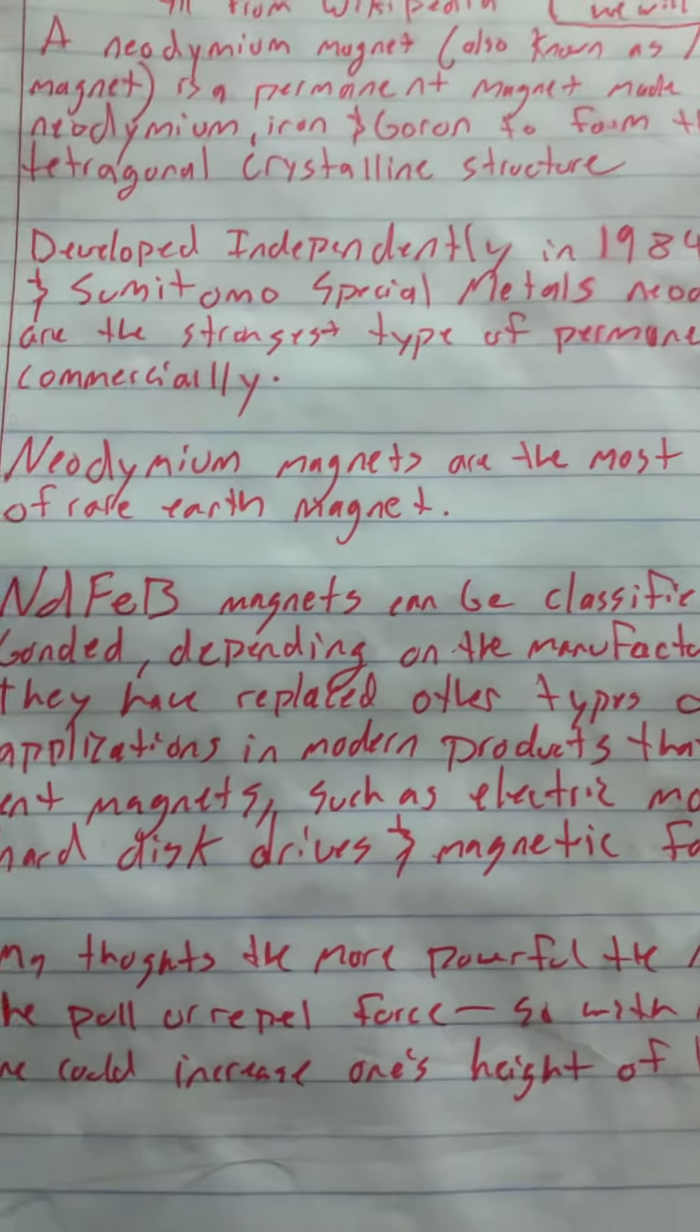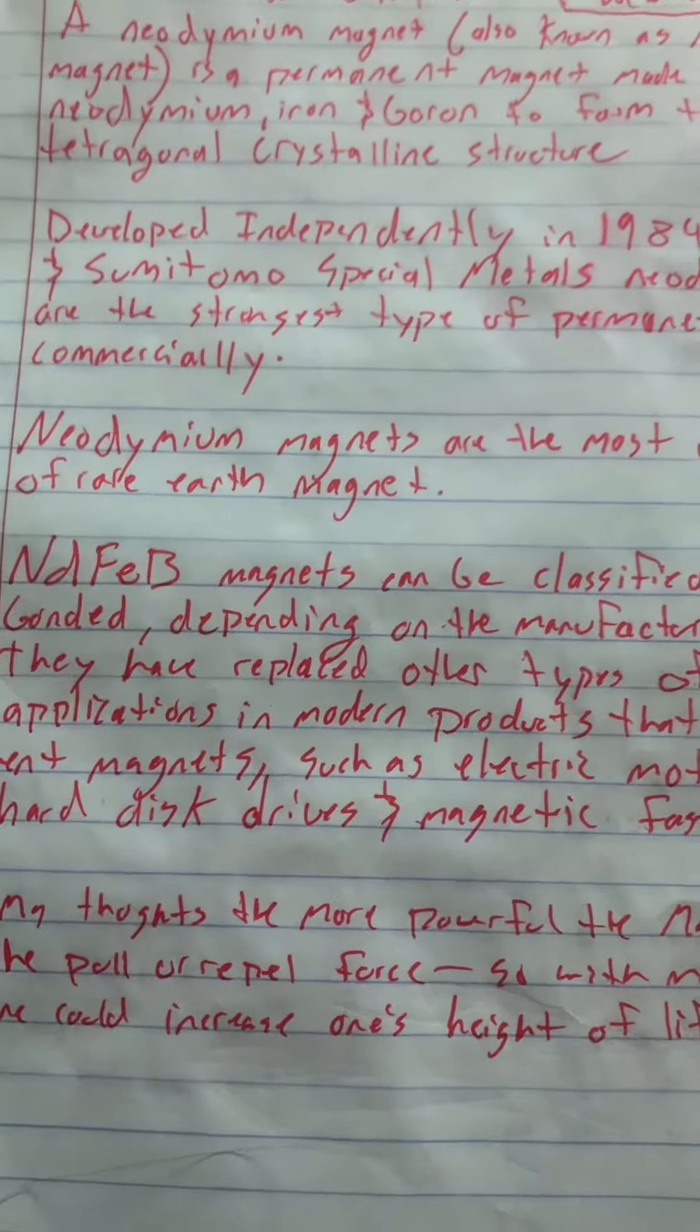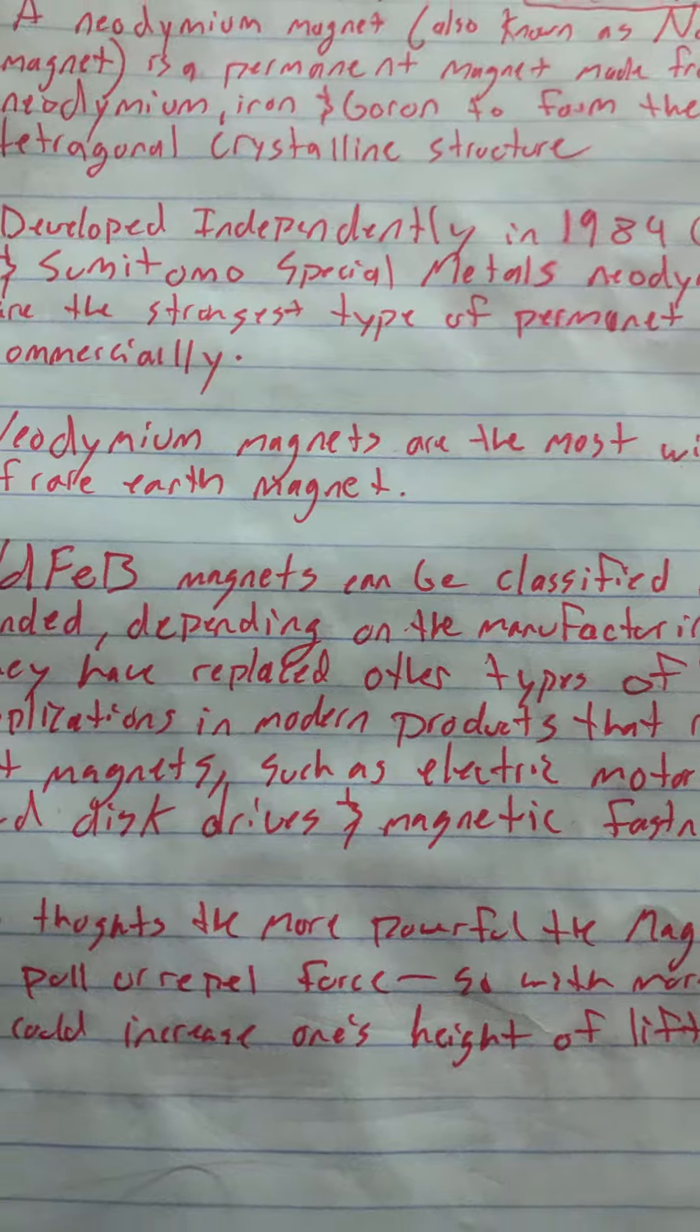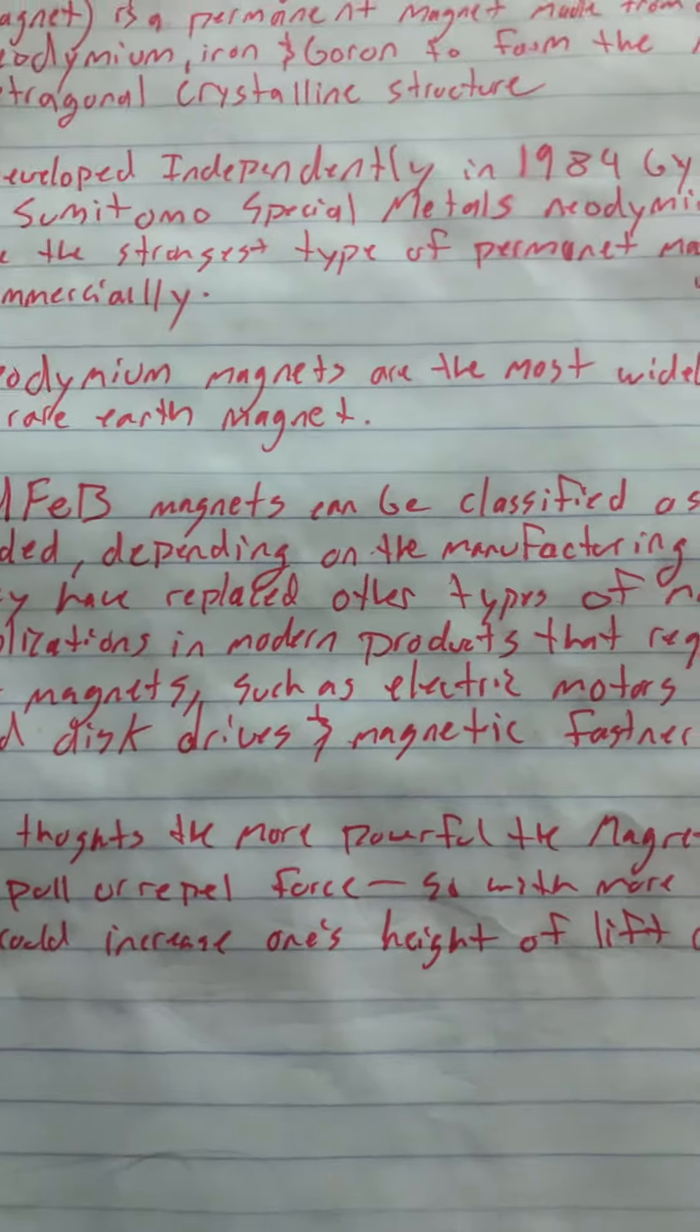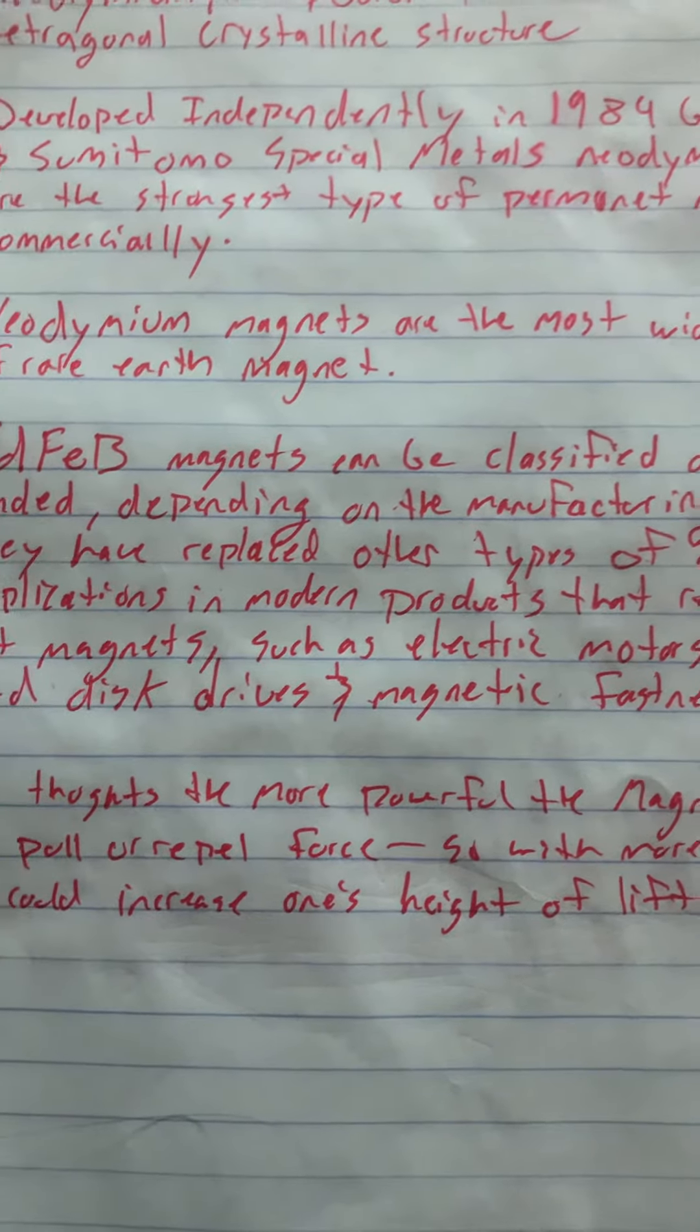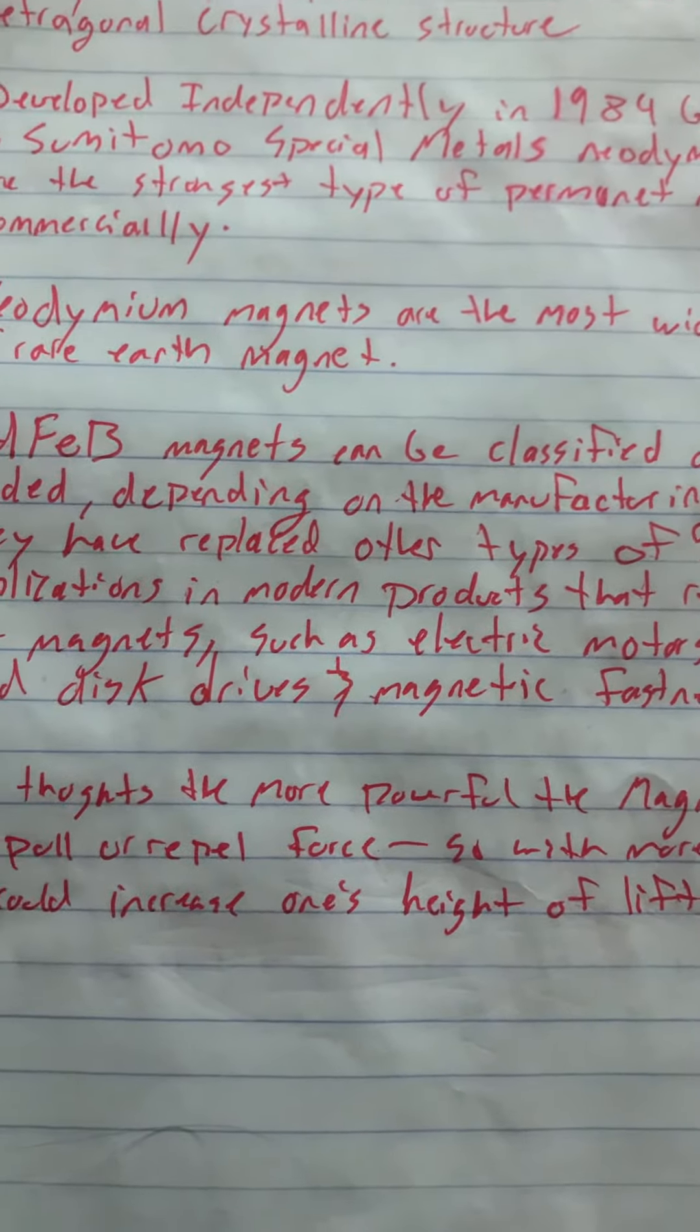Neodymium magnets are the most widely used type of rare earth magnets. These magnets can be classified as sintered or bonded depending on the manufacturing process used.